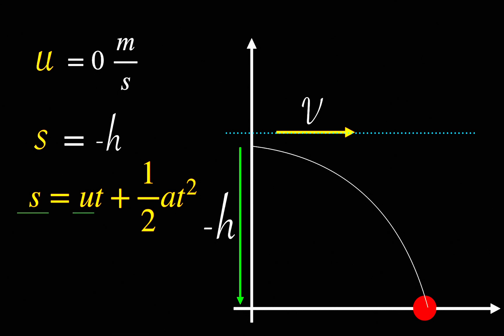If we use the values of u equals zero and s equals minus h in this equation, we will get minus h equals half at square.